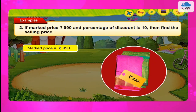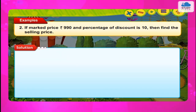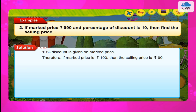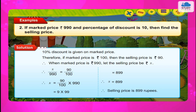Example 2: If marked price = Rs. 990 and percentage of discount is 10%, then find the selling price. Solution: 10% discount is given on marked price. Therefore, if marked price is Rs. 100, then the selling price is Rs. 90. Therefore, when marked price is Rs. 990, let the selling price be Rs. X. Therefore, X upon 990 = 90 upon 100. Therefore, X = 990 × 90 upon 100 = Rs. 891. Therefore, selling price = Rs. 891.